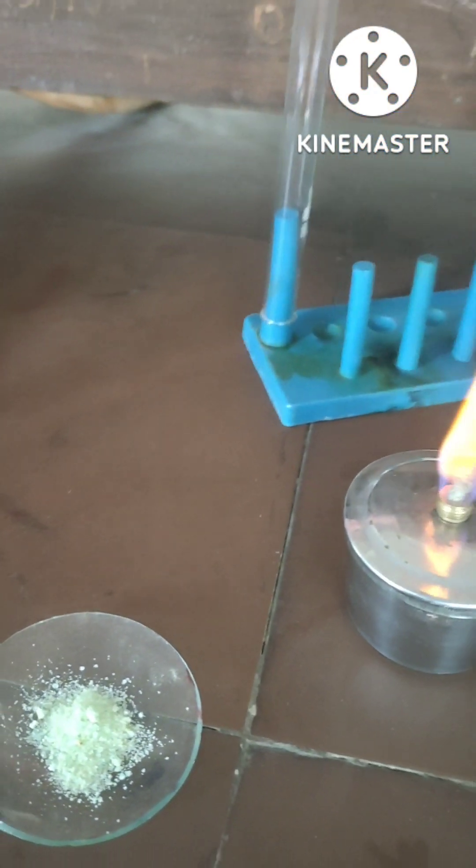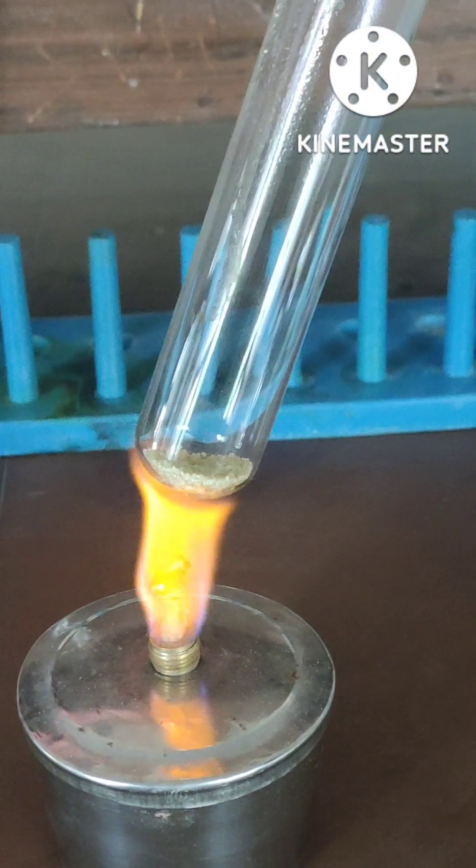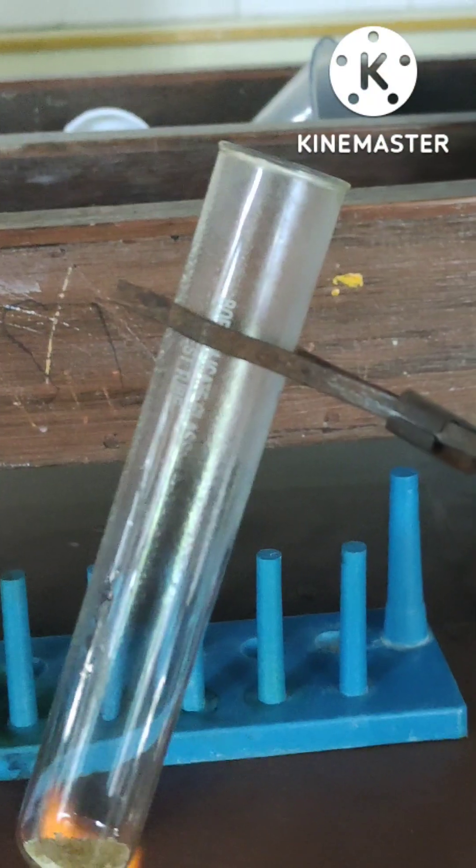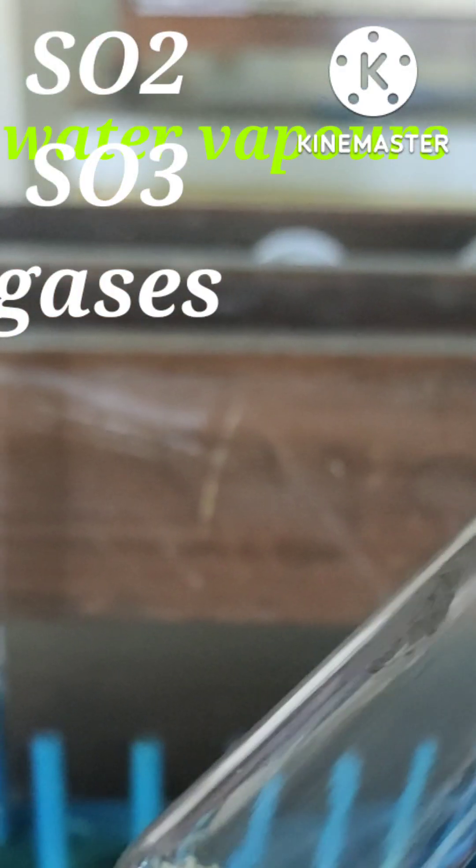Let's take a dry test tube, put the ferrous sulfate in the test tube, and heat it gently. We'll find that two gases come out: sulfur dioxide and sulfur trioxide.